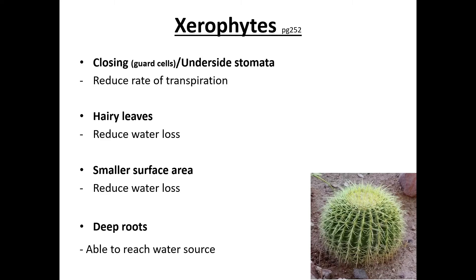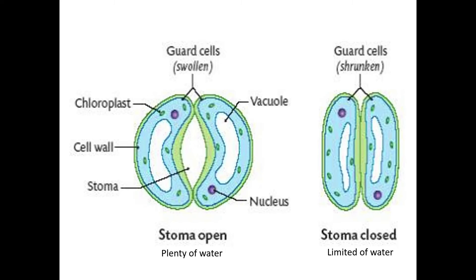Hairy leaves help to reduce water loss because cacti cannot afford to lose water. Smaller surface area also helps to reduce water loss, and deep roots are able to reach the water source underground. The stomata open when there is plenty of water, which links to hydrophytes, whereas the guard cells of stomata close to limit water from exiting — that is typical of xerophytes.